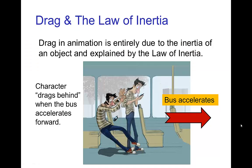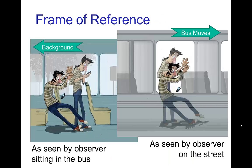Drag in animation is entirely due to inertia, explained by the law of inertia. Here's an example we've looked at before: a character standing on the bus. The bus accelerates forward and the character seems to drag behind. In reality, the character as seen from someone standing on the street is actually remaining in place by inertia, and simply the bus is moving out from under them. From the point of view of someone sitting in the bus, they look like they're falling behind.